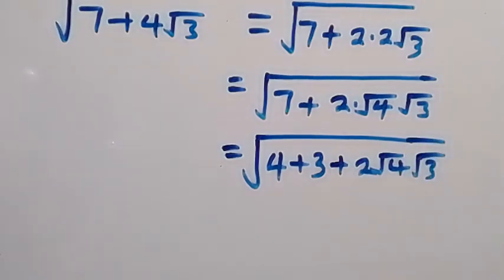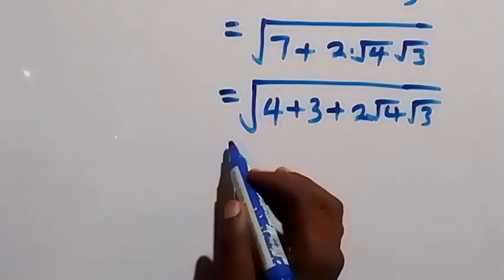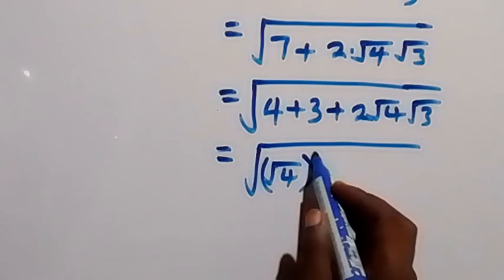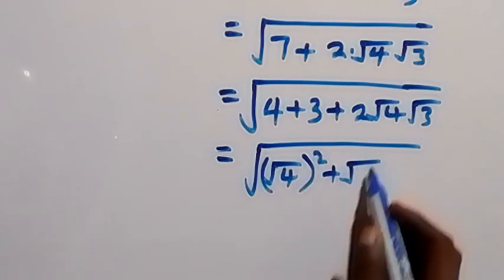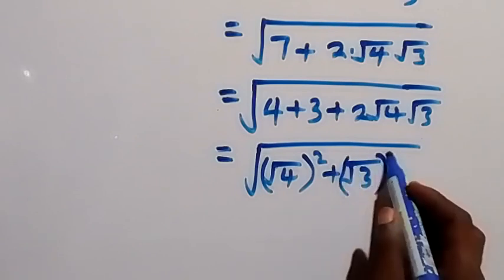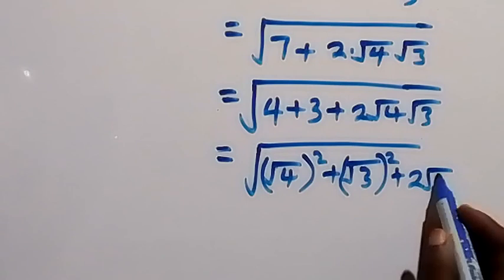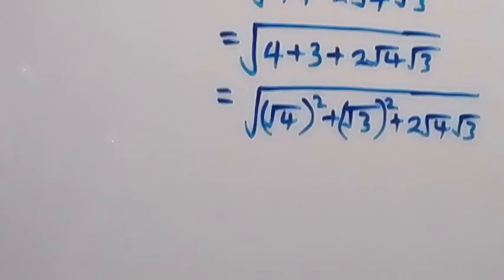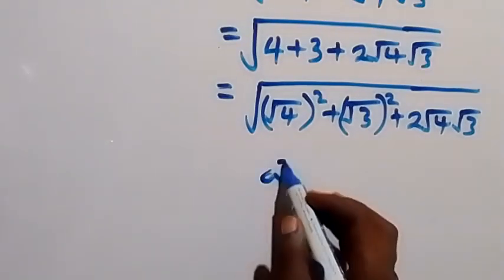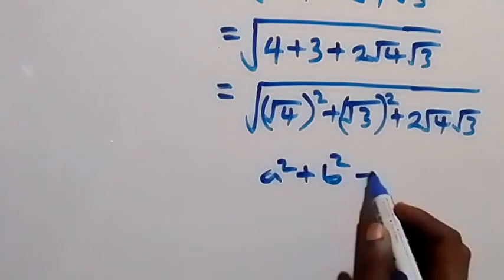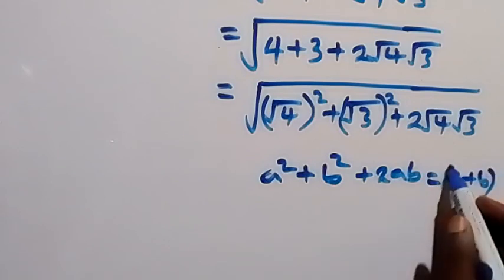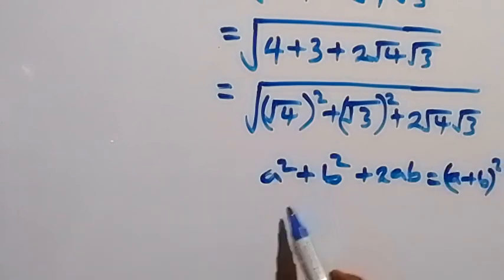From here we can also write 4 as (√4)² and 3 as (√3)². So we have square root of (√4)² plus (√3)² plus 2 times root 4 times root 3. This resembles the algebraic identity a² + b² + 2ab = (a + b)², where root 4 serves as a and root 3 serves as b.